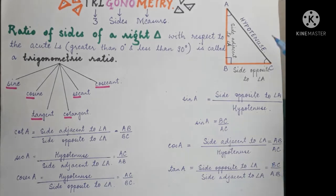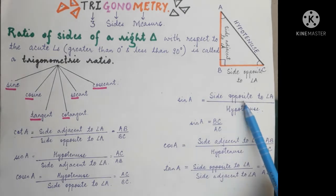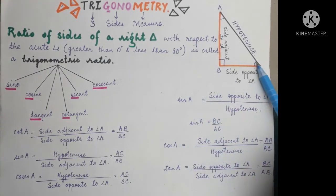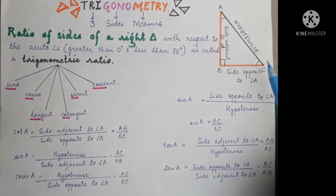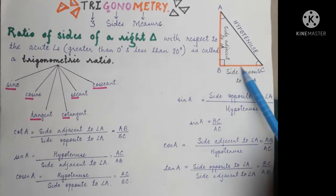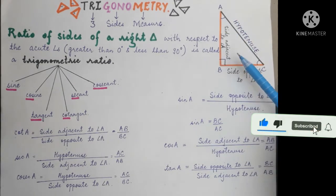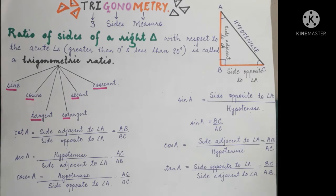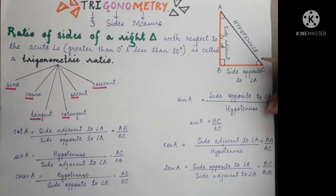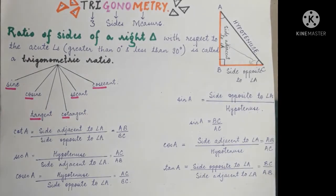Now I hope you have understood the definition of a trigonometric ratio — that is, the ratio of the sides of a right triangle with respect to its acute angles. For instance, we took acute angle A. If we take the acute angle C instead, the trigonometric ratios will be different but the meaning is the same. Sine of angle C means side opposite to angle C upon hypotenuse; cos of angle C is side adjacent to angle C upon hypotenuse; tan of angle C is side opposite to angle C upon side adjacent to angle C.